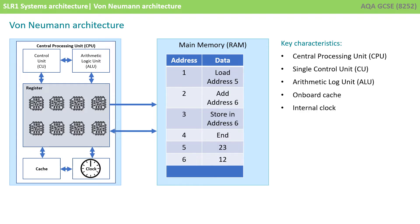A von Neumann architecture has key characteristics. It has a central processing unit, a CPU, with a single control unit. Inside it has an arithmetic logic unit, an ALU, onboard cache which is small amounts of high-speed memory that helps the control of instructions and data around the CPU, and also an internal clock which provides a pulse at a constant rate to synchronize components. This architecture fetches, decodes and executes instructions. This isn't the most efficient design for processing, but it was indeed simple.